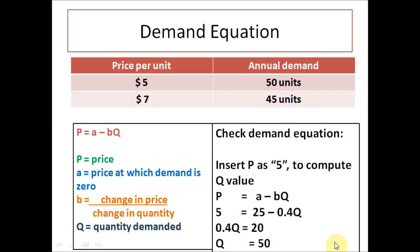So we know that our equation is right because we got our demand as 50 when the price was 5.